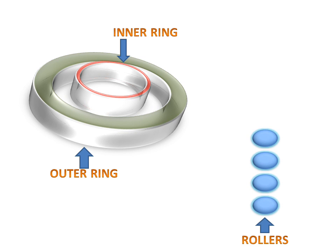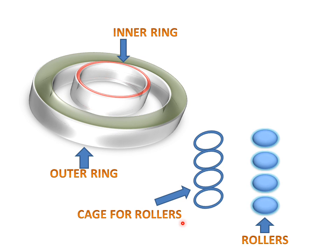There are rollers which will work between the inner and outer ring of the bearing. These rollers sit inside a cage, and the rollers and cage work together.